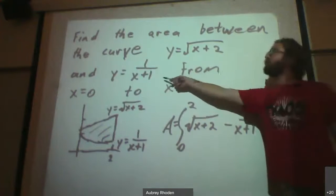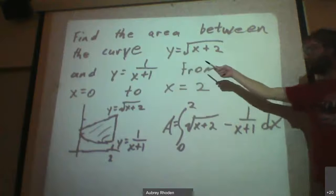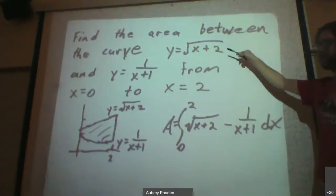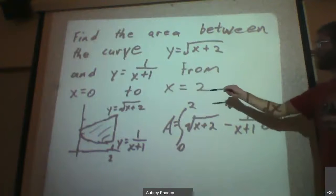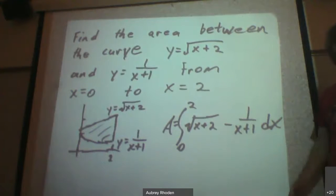If I plug two into this one, I get one third. If I plug two into this one, I'm going to get the square root of four, which is two, and two is definitely bigger than one third. So that means that the square root of x plus two is on top and one divided by x plus one is on bottom.